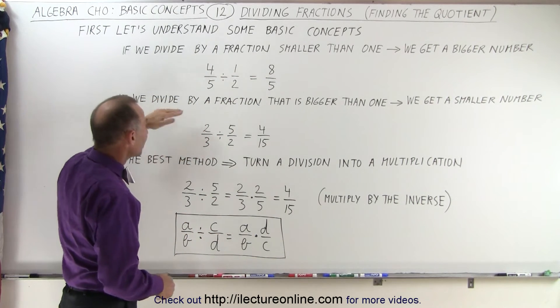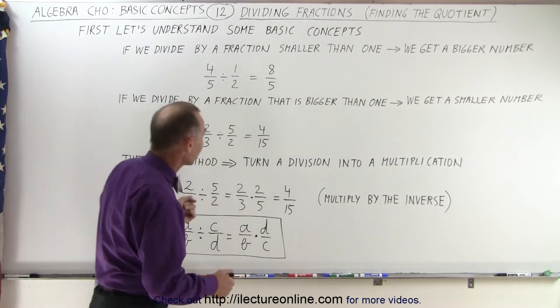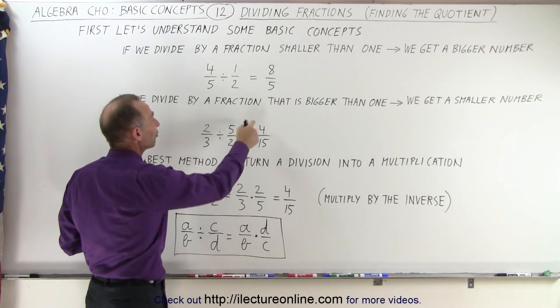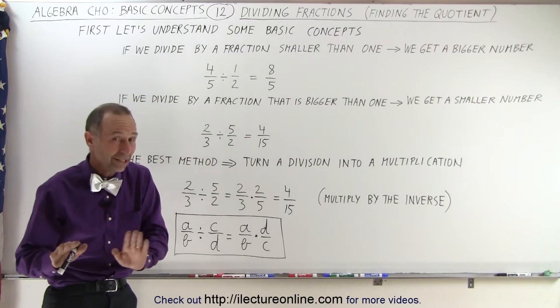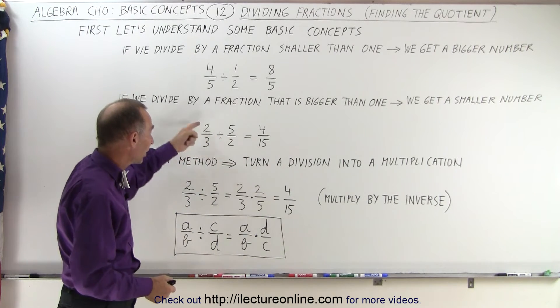Then, if we divide by a fraction that is bigger than 1, the number does indeed get smaller. For example, if we take 2 thirds and divide it by 5 halves, we get 4 fifteenths. Now we didn't show yet how that works, but you can see that 4 fifteenths is a smaller number than 2 thirds.